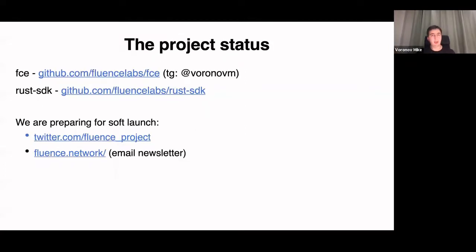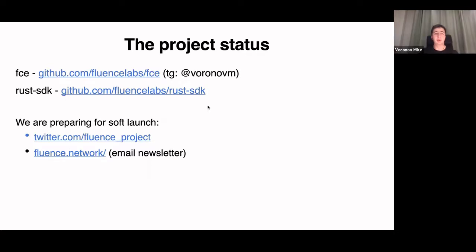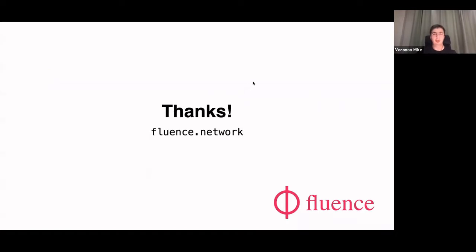Thank you all for attention. On the last slide I want to provide several links to the Fluence Compute Engine and the Rust SDK. You can also find me on Telegram. You can make issues on our repositories or on our core repository at CodeFluence. We are preparing for a soft launch at the beginning of November, where there will be information about Aquamarine and internals of our network. To keep in touch, follow us on Twitter or use our email newsletter on our site.